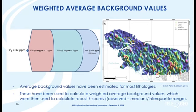Another approach is to work out a weighted background value for the catchment. If we have an average or median background value for individual lithologies, and we know the proportion of each of those lithologies in the catchment, we can calculate what an average background value should be for that catchment. The difference between the actual sample value and the calculated background will tell us whether we have something interesting. This map is a gridded image of those residuals — the actual observed value less the calculated average background value for the catchment — and it's not dissimilar to the product we generated simply by looking at leveled geology.